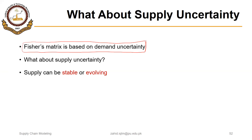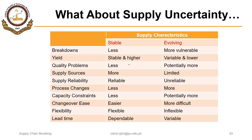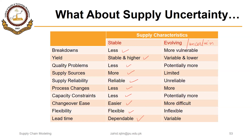But what about supply uncertainty? Supply can be stable, or it can be evolving and uncertain. If there is stable supply, there are fewer breakdowns, stable and higher yield, fewer quality problems, more sources of supply, high reliability, few process changes, few capacity constraints, easy changeover, flexibility, and dependable lead time. But if supply is evolving or uncertain, these characteristics of the supply side are just the opposite.